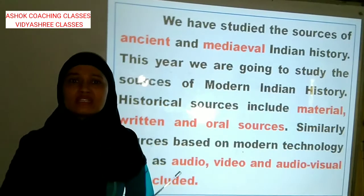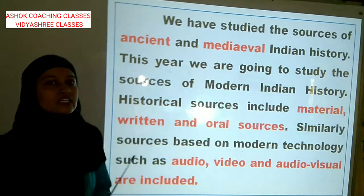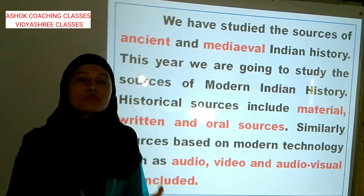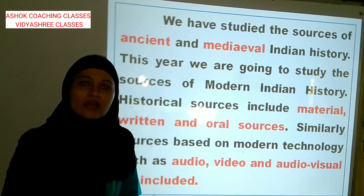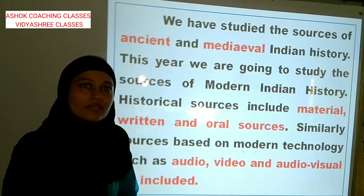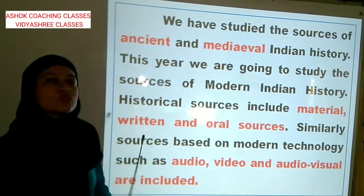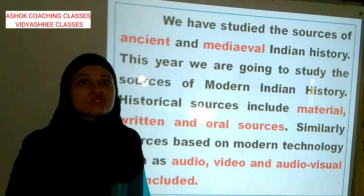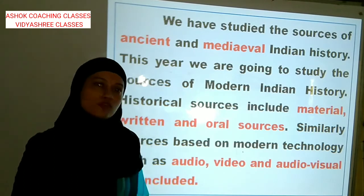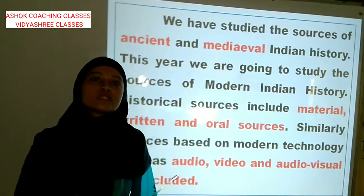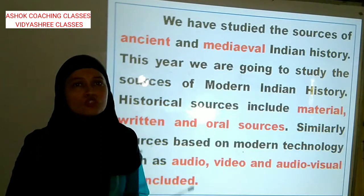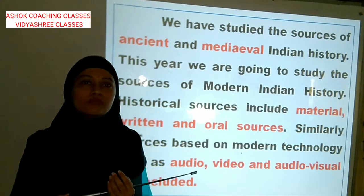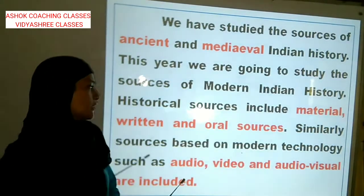Historical sources mein kya kya aate hain? Material sources matlab objects, jaise ki koi bhi object ho gaya, jaise coin ho gaya, ya building ho gayi, ya monuments ho gaye. Then written sources, yaani jo bhi likhit roop mein hai, jaise ki koi letters ho gaye, ya koi book ho gayi, newspaper ho gaya. And oral sources mein kya hainein? Folk songs ho gaye, ya phir koi proverbs ho gaye, ya phir koi story ho gayi.